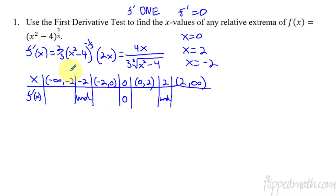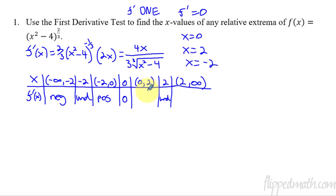Let's do a really huge negative number: you're going to have a negative on top, a big number squared makes it positive minus four — that's still going to be positive — so negative over positive is negative. Now let's do negative one in the next interval: negative one on top is negative, negative one squared minus four is negative, but negative over negative makes a positive. Plug in one: one on top is positive, one minus four is negative on bottom, so positive over negative is negative. Then from two to infinity: super big positive number divided by super big positive number minus four is still going to be positive.